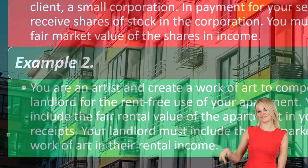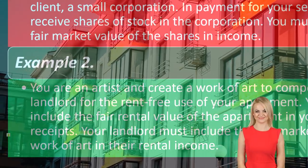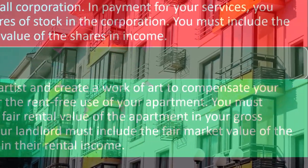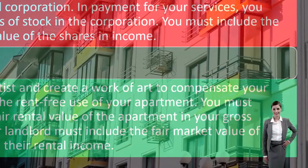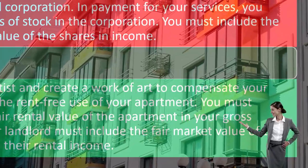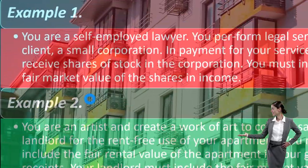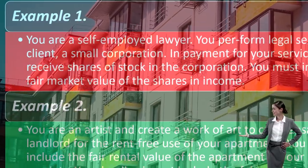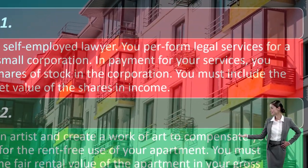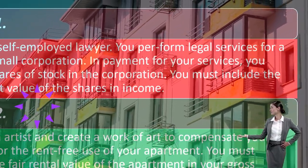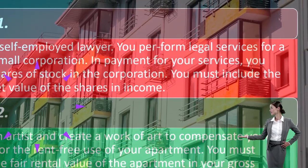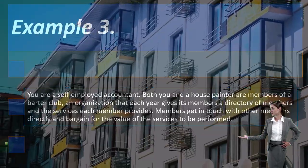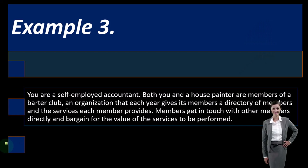You must include the fair rental value of the apartment in your gross receipts, because you were provided use of the apartment and you would otherwise have been paying rent. Your landlord must include the fair market value of the work of art in their rental income — they received the artwork and paid for it, in essence, with the apartment.